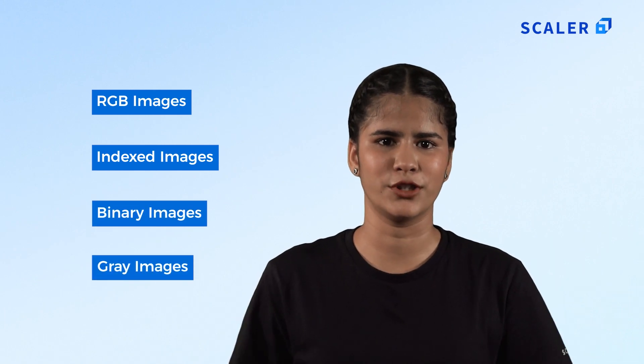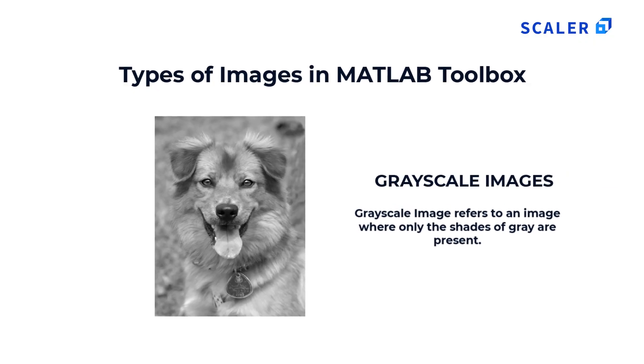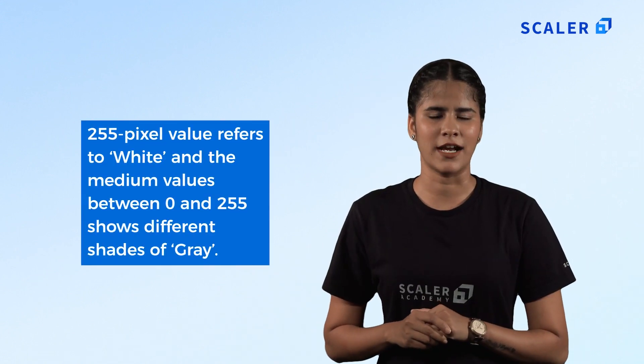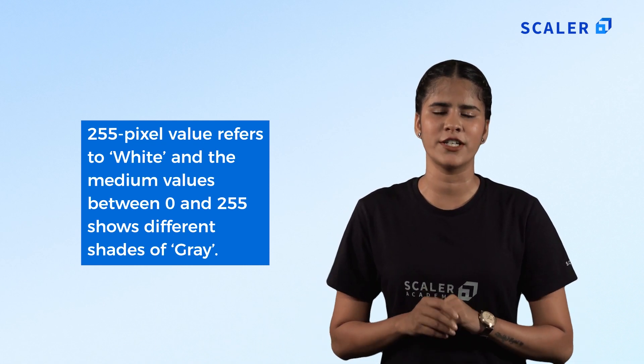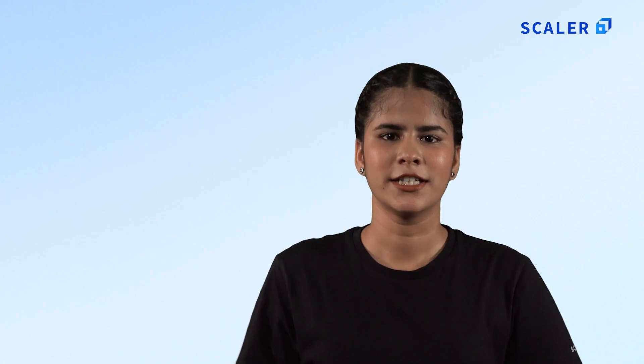There are mainly four types of images supported by the MATLAB toolbox: RGB images, indexed images, binary images, and grayscale images. Grayscale images contain only shades of gray and are also known as monochrome images. They use 8 bits per pixel, where a value of 0 refers to black, 255 refers to white, and values in between represent different shades of gray.